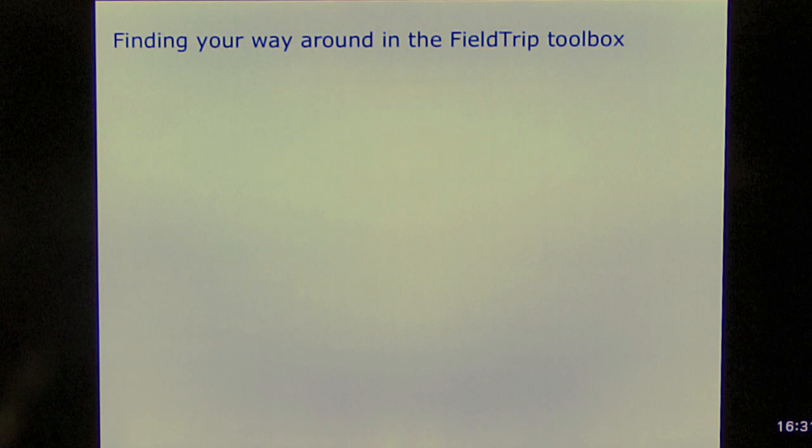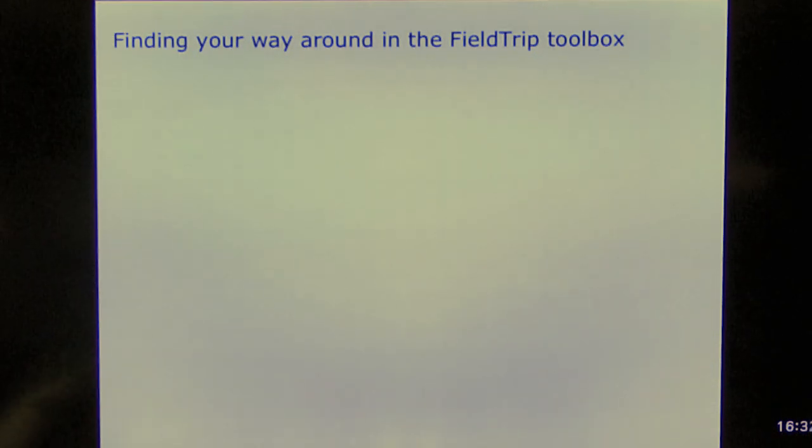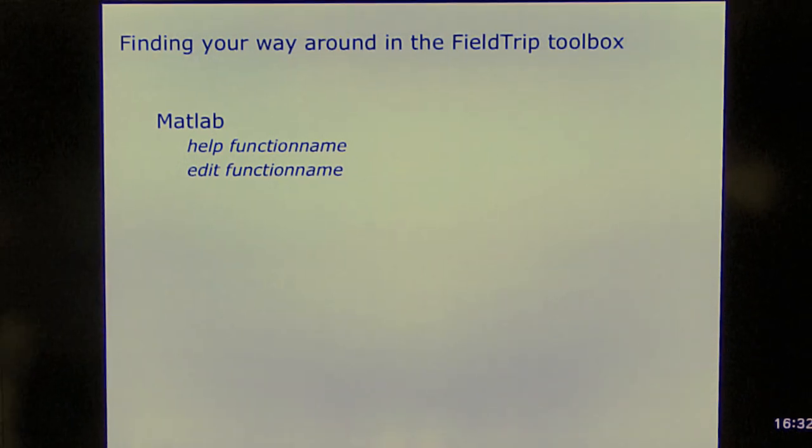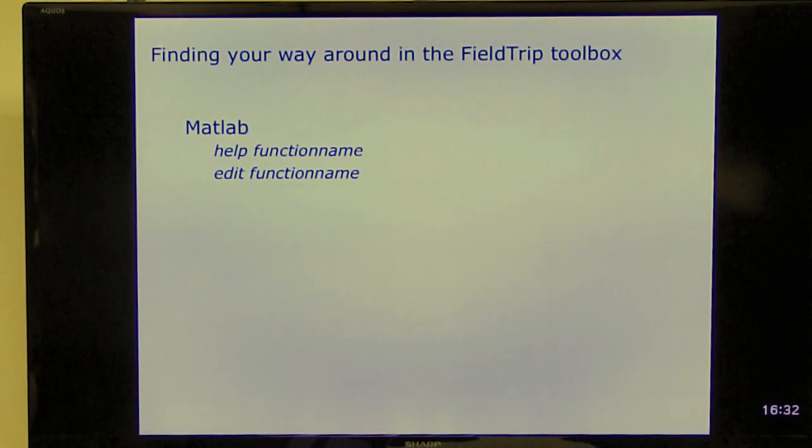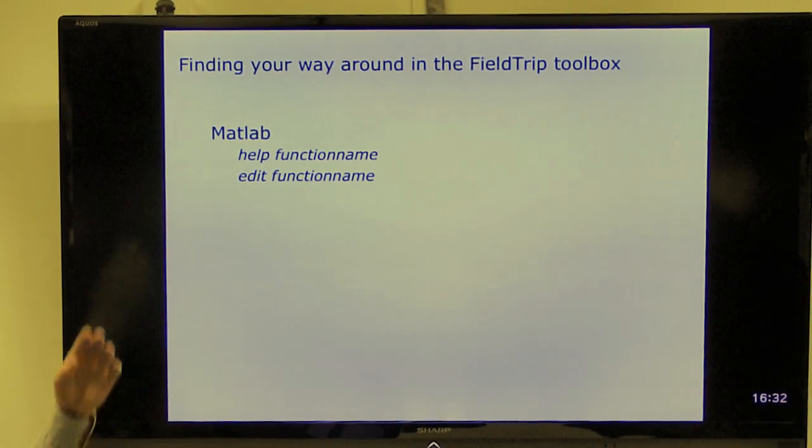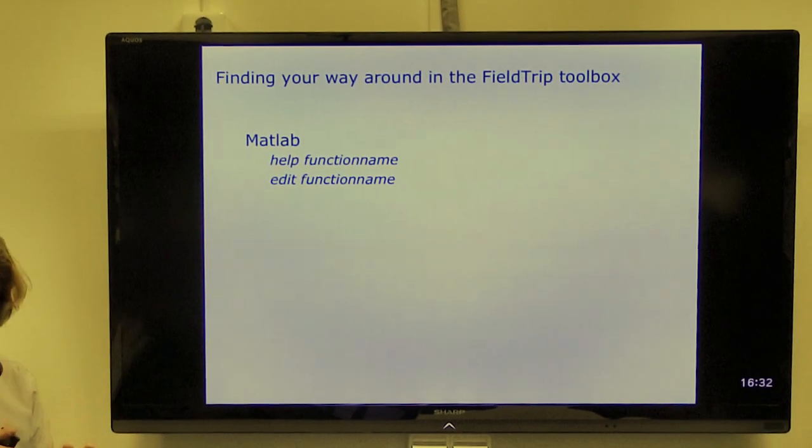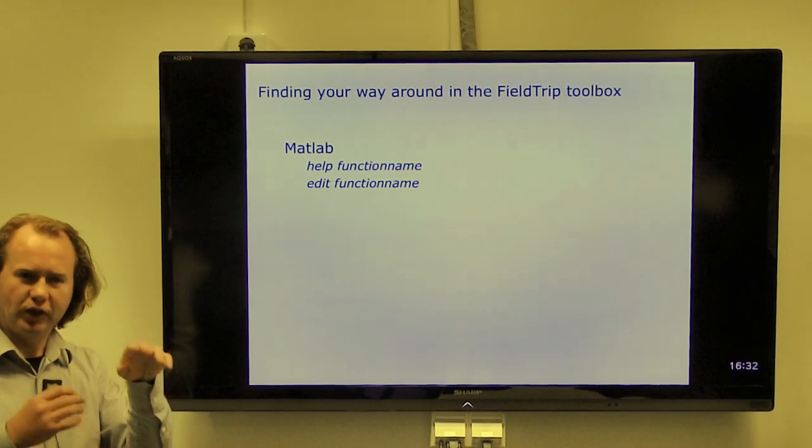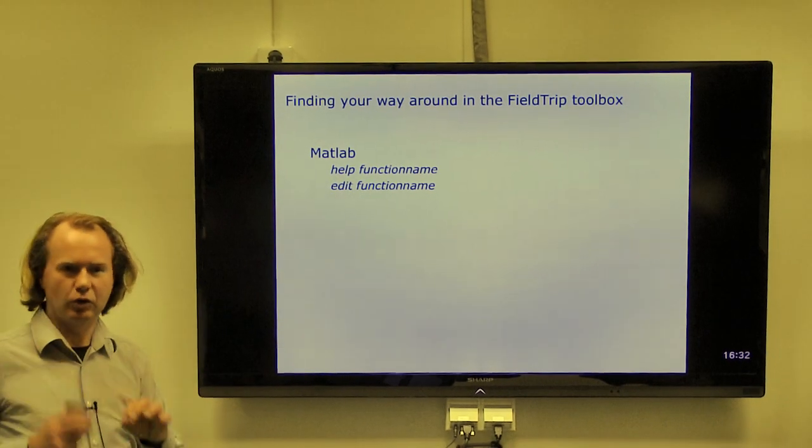For that we provide documentation of course. So finding a way around it in the FieldTrip toolbox is a very important aspect. Well first of all you can just use the built-in MATLAB functionality. You can type help function name. It will give you an informative section on how the function is to be used. And in every function we provide pointers to other functions that are related to it. Also important is that you can edit functions. Like it's open source. So all the code is there. So if the help doesn't specify what a function is doing to the level of detail that you want to know it, just look in the code.